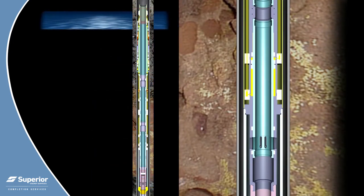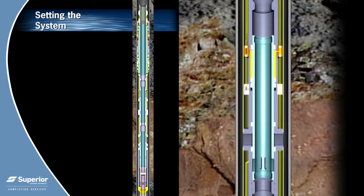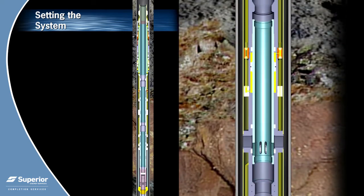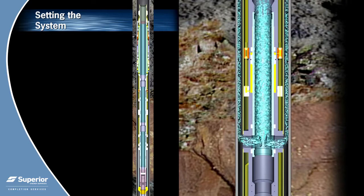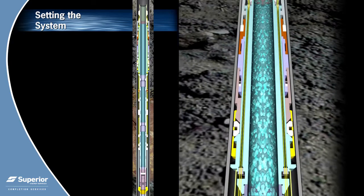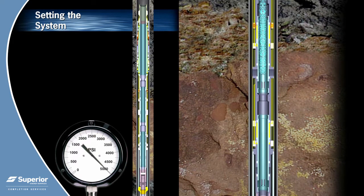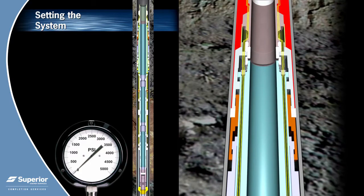Prior to setting the upper production packer, the packer fluid is circulated into the annulus and an under-balanced condition to the lower zone formation is created by closing the lower hydraulic multi-service valve and opening the upper hydraulic multi-service valve. Once the packer fluid and under-balanced condition has been achieved within the tubing, the upper hydraulic multi-service valve is closed to seal the tubing for setting the comp pro packer. Tubing pressure is applied to fully set and test the comp pro packer. With a successful test, the pressure is released and the upper hydraulic multi-service valve is opened to vent the area below the comp pro packer.